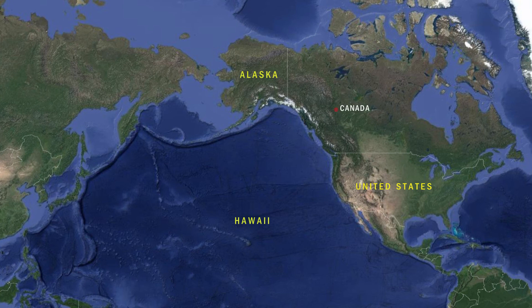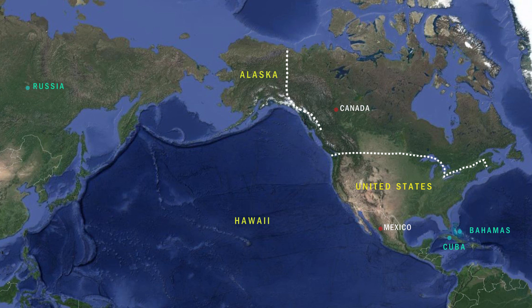The United States borders Canada in the north and Mexico in the south, sharing the longest bilateral border in the world with Canada. In addition to its land border, the US has a maritime border shared with Russia, Canada, Cuba, and the Bahamas. The delineation of US borders was achieved through numerous treaties throughout its history. In terms of neighboring countries, the US dominates.